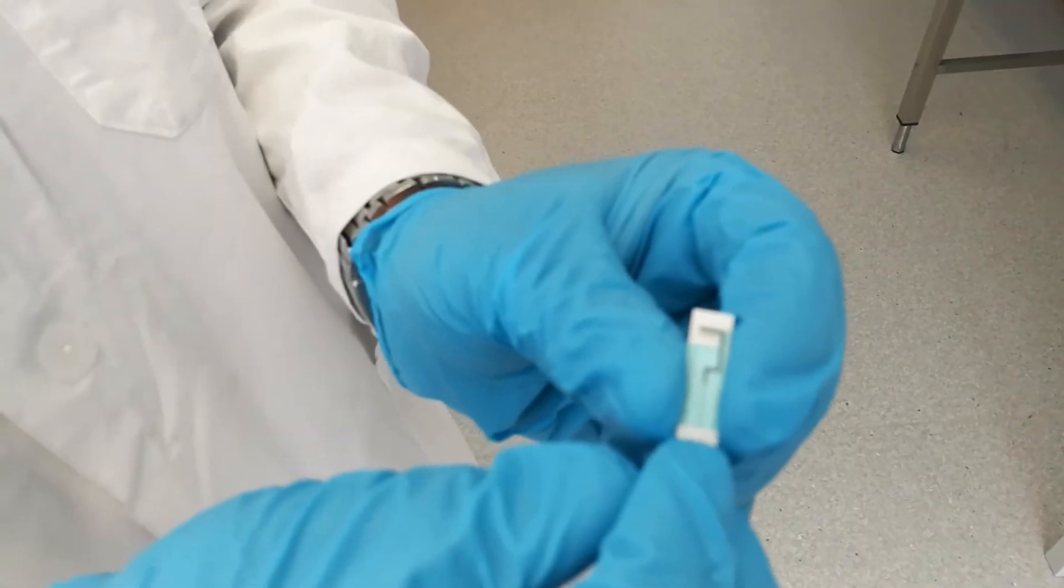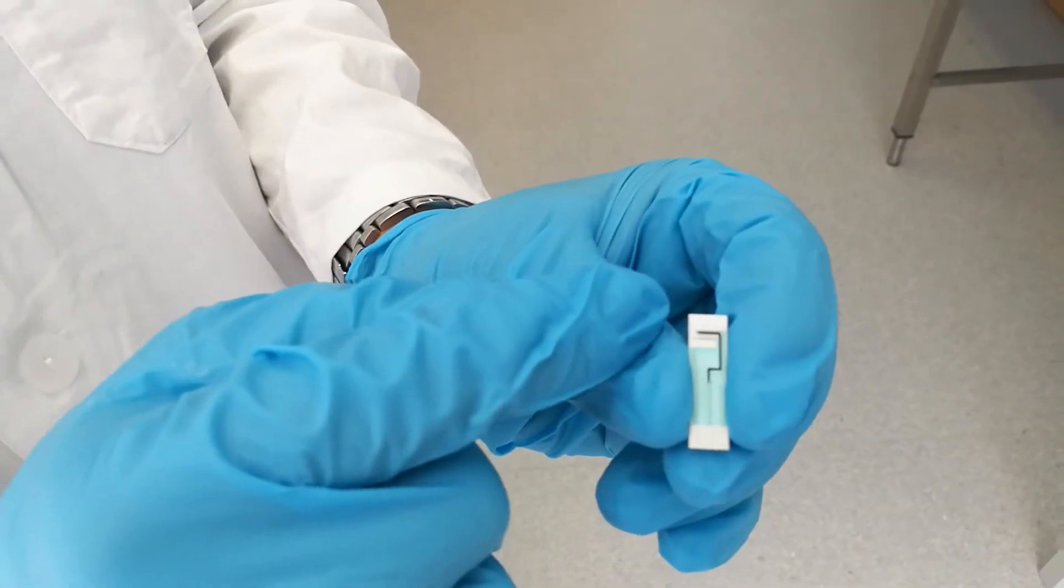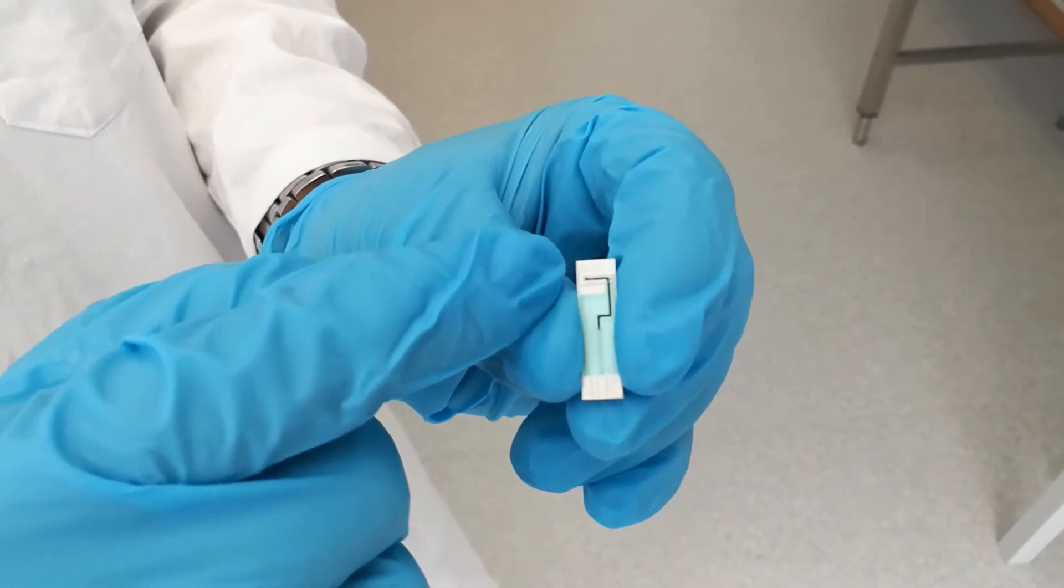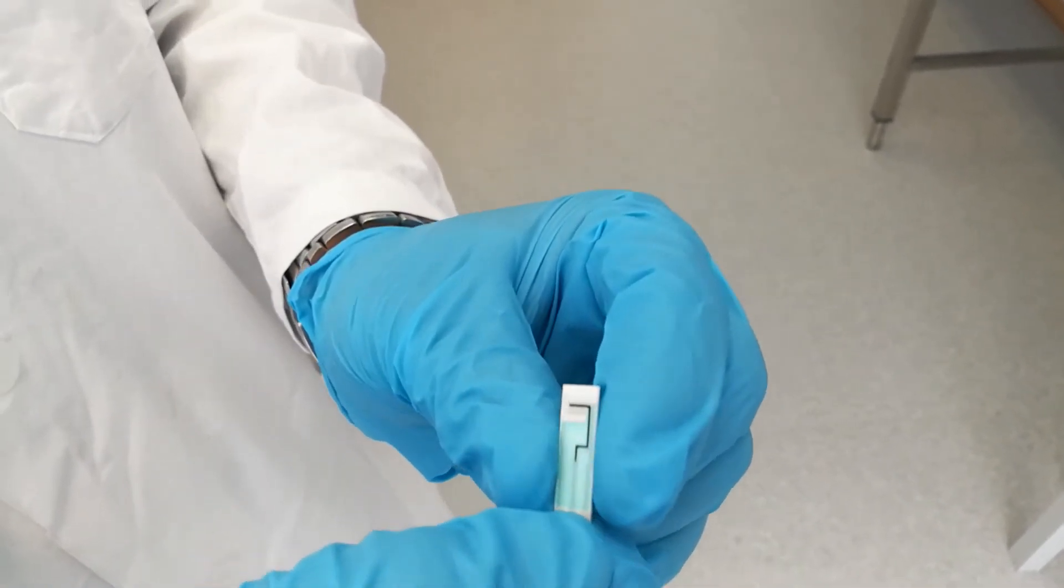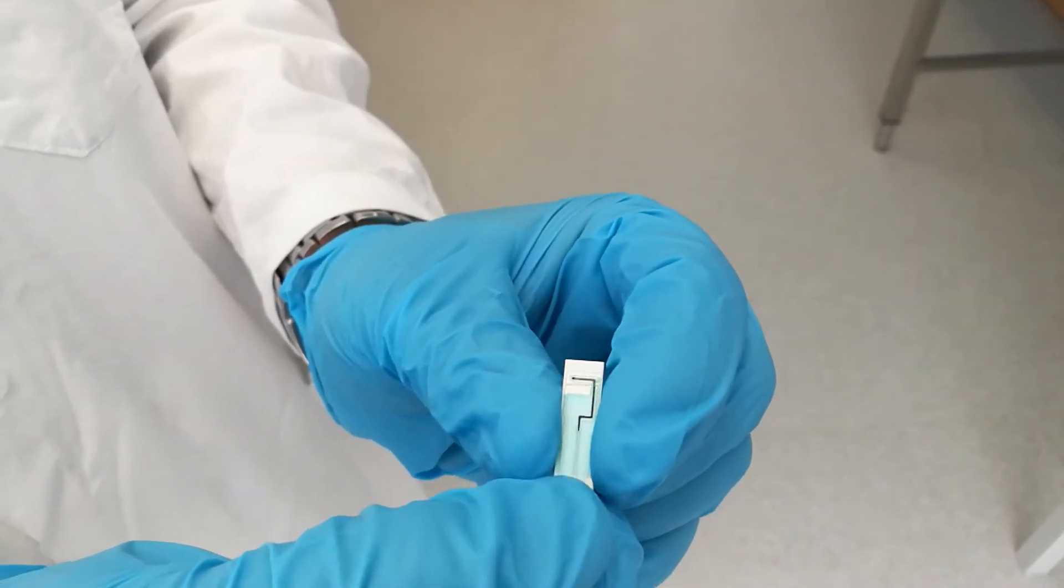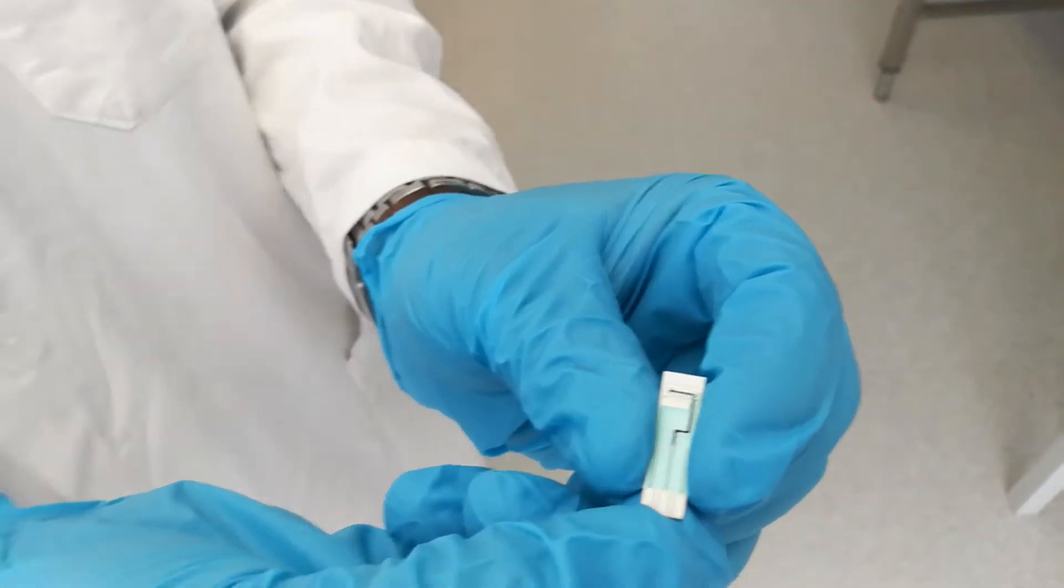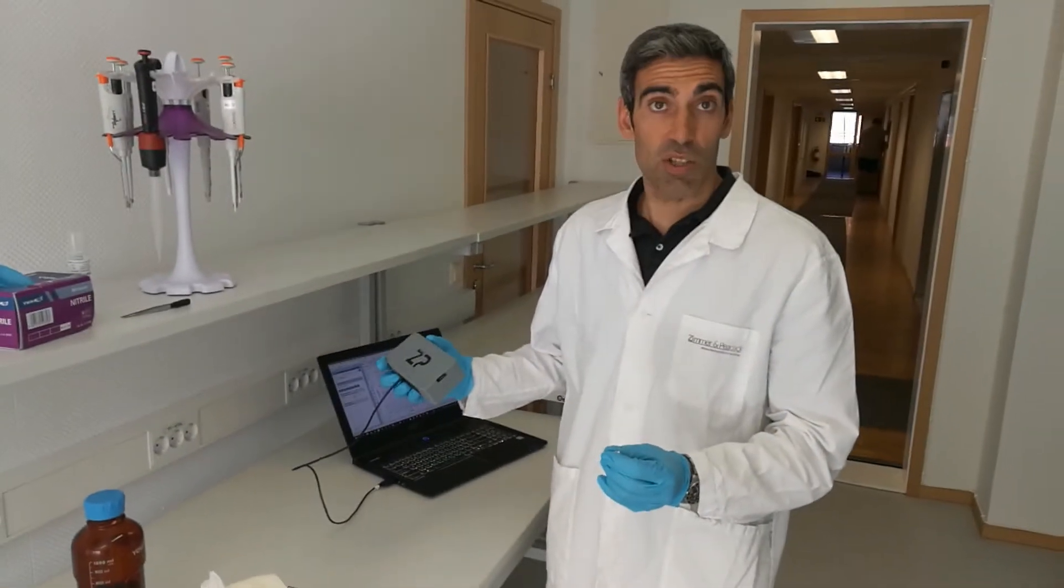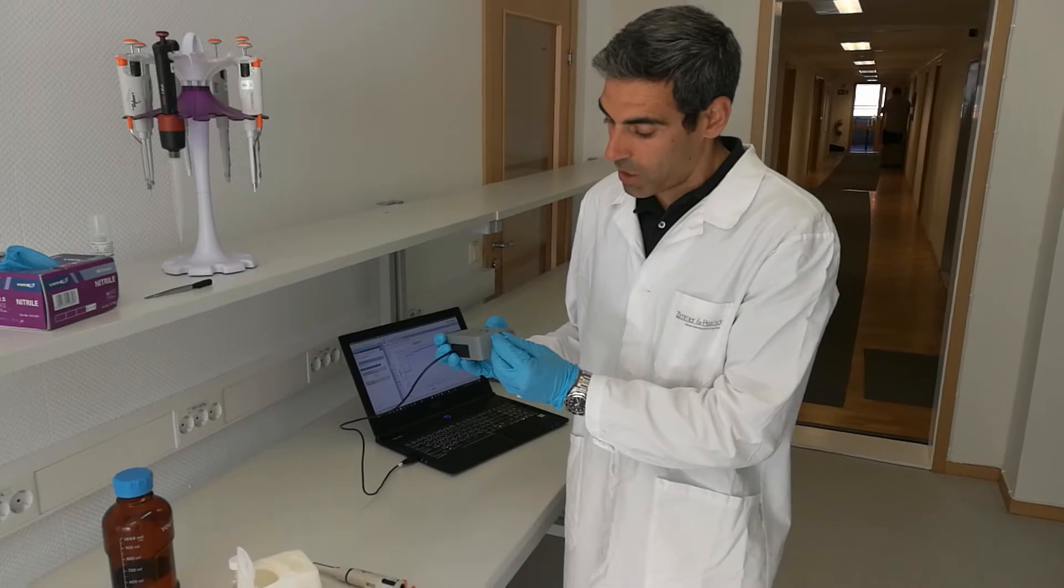This is a typical potassium sensor which has an ion-sensitive membrane on top of the working electrode, which is a dark carbon electrode, and reference and counter electrodes made of silver silver chloride. What I'm going to do first is connect this sensor to this potentiostat that's connected to the PC.